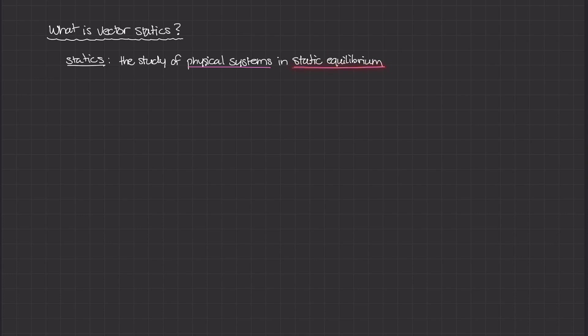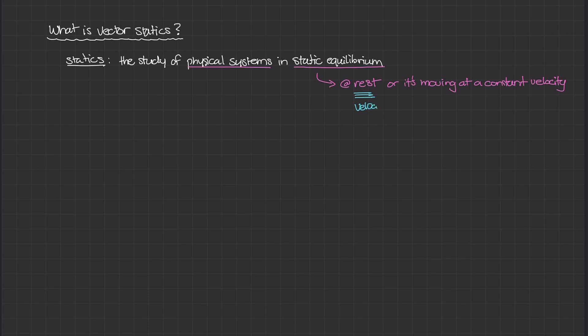More importantly, what does static equilibrium mean? It means that the object we're studying, where all these forces are being exerted onto, is either at rest or moving at a constant velocity. When an object is at rest, its velocity is zero, and more importantly, its acceleration is also zero.